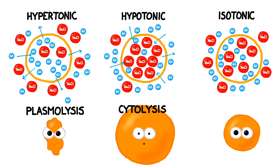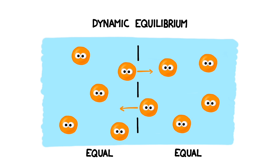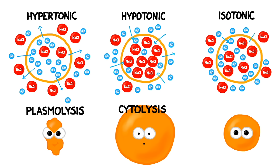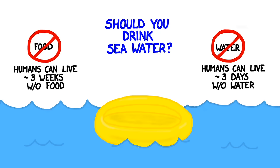Placing a cell in an isotonic solution, where the concentrations inside and outside are equal, is much more pleasant. Equal amounts of water molecules continue to pass in and out of the cell. The system is in dynamic equilibrium — particles are continuing to move, but the net movement is zero. The cell neither grows nor shrinks and is much more likely to survive.